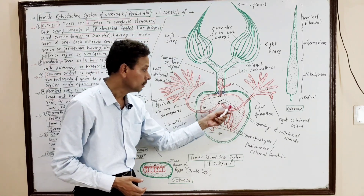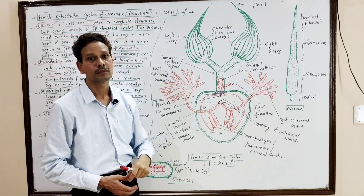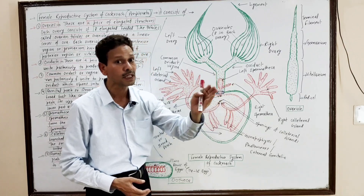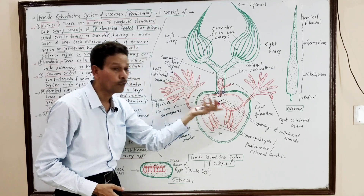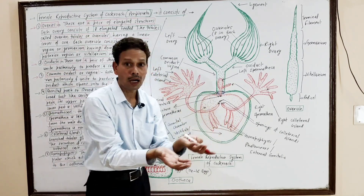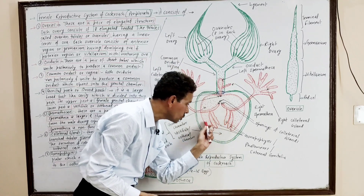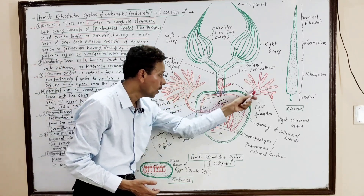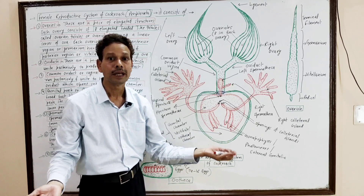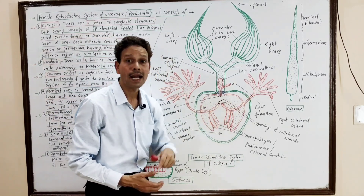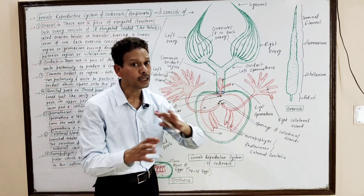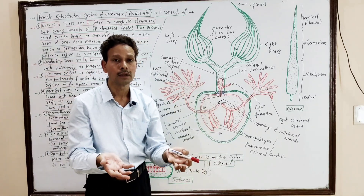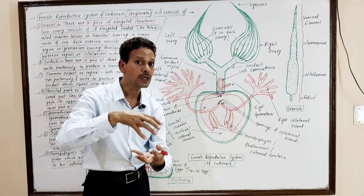From each ovary, about 14 to 16 mature ova are released at one time. These ova are collected in the posterior part of the brood pouch. The collaterial glands also secrete their juice, and the secretion of these collaterial glands is involved in the formation of the ootheca case — a chamber in which eggs are stored.